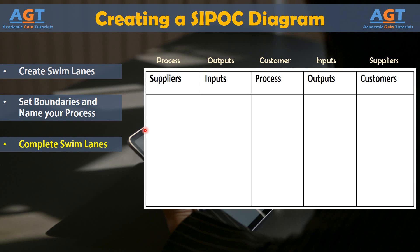To keep the session from turning into a detailed process mapping activity, ask the team to describe the process in less than 5 to 7 steps. Keep things simple by limiting process steps to short verb-noun combos such as enter information, collect money, or place labels.